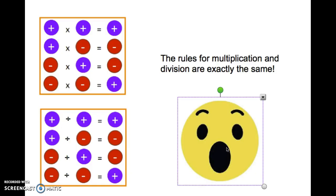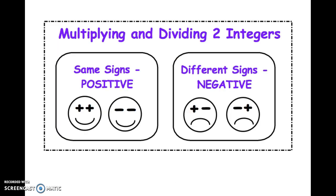So I really like this particular graphic because instead of looking at eight different things you can kind of just simplify it down. When you're multiplying and dividing two integers at a time, if you have the same signs, our answer is positive. So a positive times a positive makes a positive. Negative times a negative makes a positive. That works for dividing too. Positive divided by positive equals a positive.